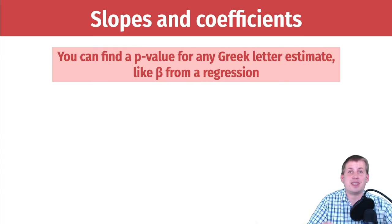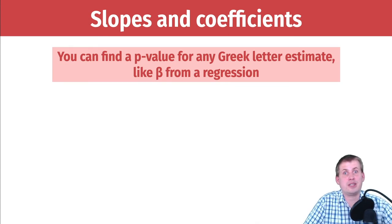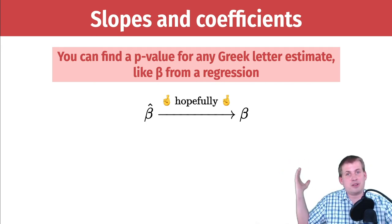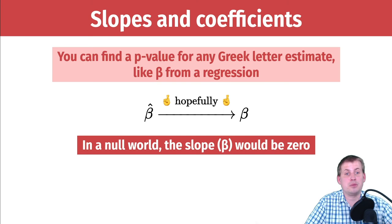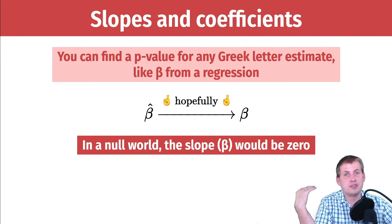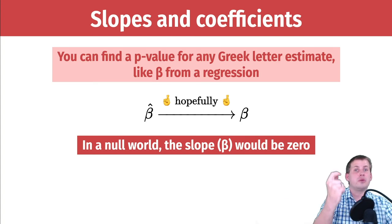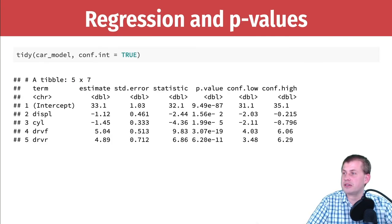P-values aren't just for t-tests — any Greek letter can have a p-value, because we're always trying to say: does this thing we're measuring reflect the general population, is it a real effect? In a regression model, you'll have beta coefficients with p-values. We're asking: does our measured beta-hat reflect reality? In the null world, beta would be zero, meaning there's no relationship between x and y. The p-value on a regression coefficient shows the probability of seeing that beta in a world where beta is zero.